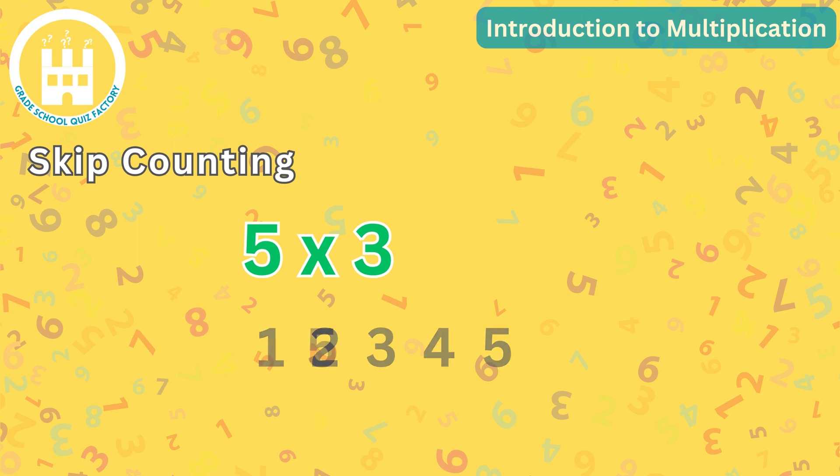we can skip count by 5s: 5, 10, 15. So 5 times 3 equals 15.